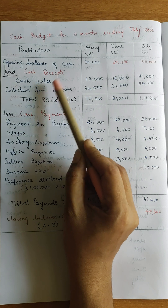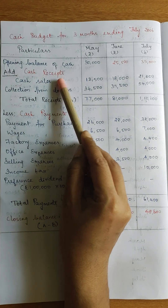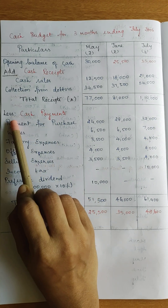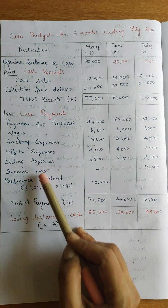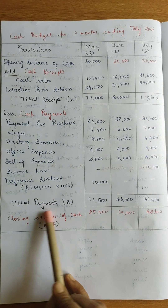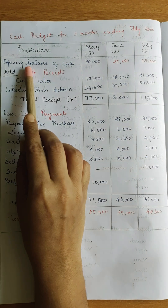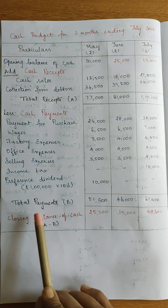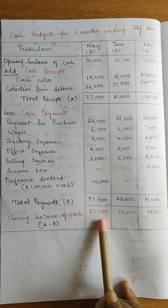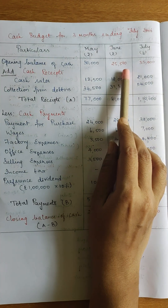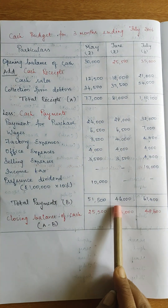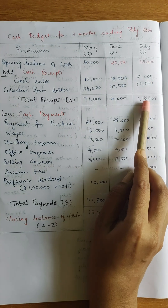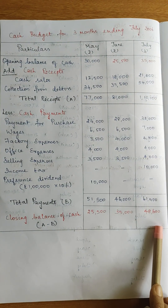Only cash receipts are noted. Under items, we post opening balance, then cash receipts, then total receipts. Then we post all cash payments and get total payments. Closing balance is total receipts minus total payments. The first month's closing balance becomes the next month's opening balance. This is the format for the cash budget.